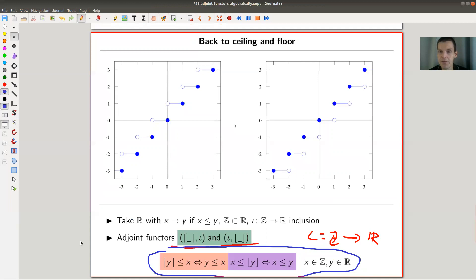You draw one arrow between X and Y, if X is lower than Y. So I don't want to draw this category. This gets messy, of course. But anyway, so we draw one arrow between X and Y, if X is lower than Y.